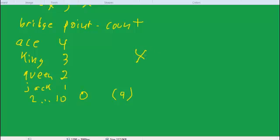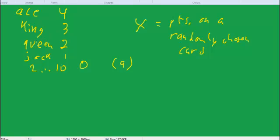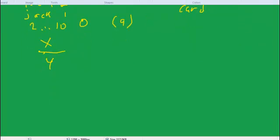So if you pick a card and then count the number of points associated with that card, that is a random variable. So we'll let x be the points on a randomly chosen card from a typical 52 card deck. Okay, so the values of x, x can take on five possible values. We can have four, three, two, one, or zero.